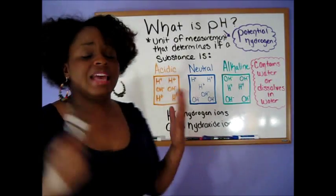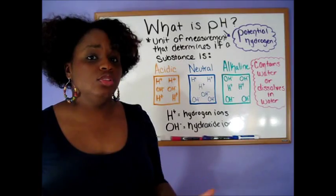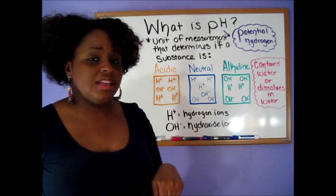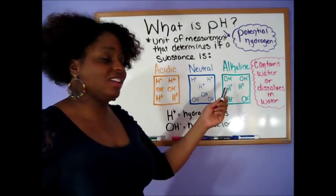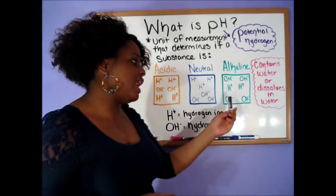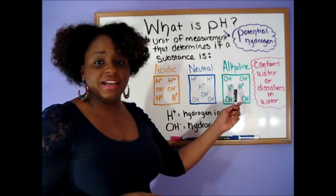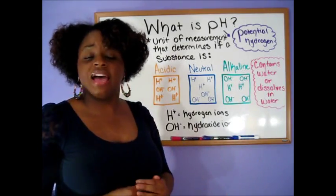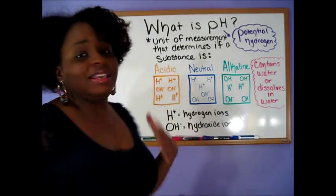Now when a solution is alkaline, it means that there's more hydroxide ions within the solution than hydrogen ions, and that is why I have OH minuses, which are the hydroxides, and I have four of those hydroxide ions within the solution and two hydrogen ions. So the hydroxide ions outweigh the hydrogen ions, which makes it alkaline.